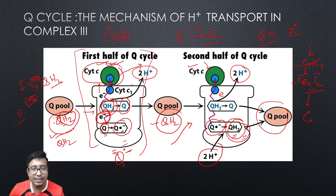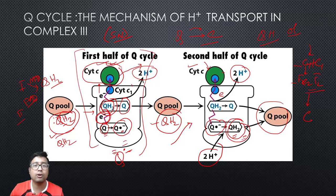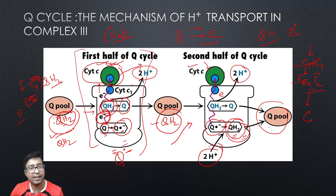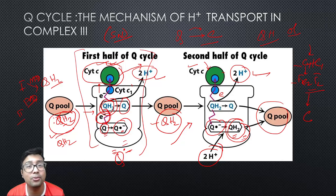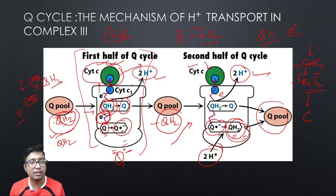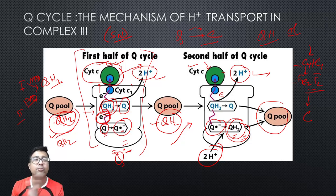To summarize the Q cycle: one reduced QH₂ comes, loses two electrons — one goes to cytochrome C, one waits in semiquinone form. Another QH₂ comes, one electron goes to a second cytochrome C, and the semiquinone takes up two protons and the second electron, becoming ubiquinol. Four protons are lost in total. For the exam, drawing this diagram with a brief explanation of both halves of the cycle will be sufficient.